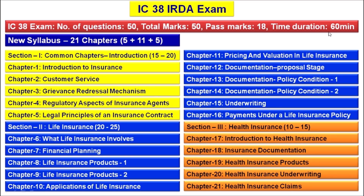As per the new syllabus, out of 50 questions it is expected to get about 15 to 20 questions from Section 1 common chapters, 20 to 25 questions from Section 2 life insurance, and 10 to 15 questions from Section 3 health insurance.